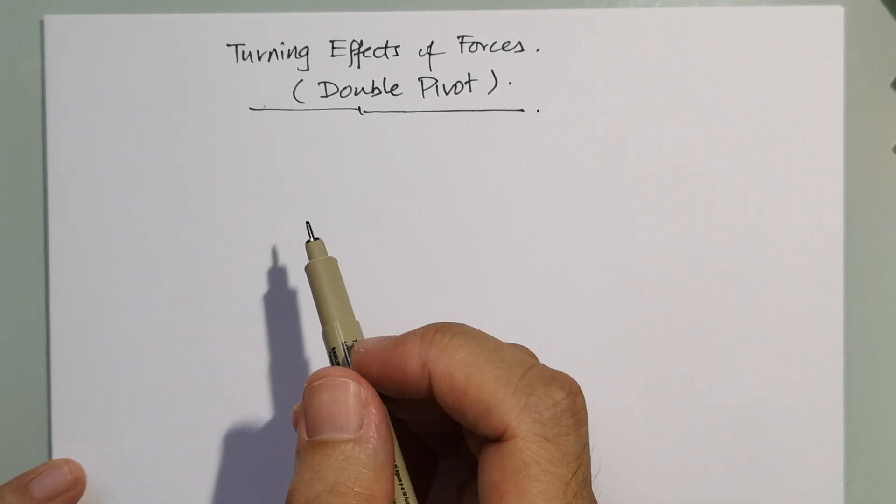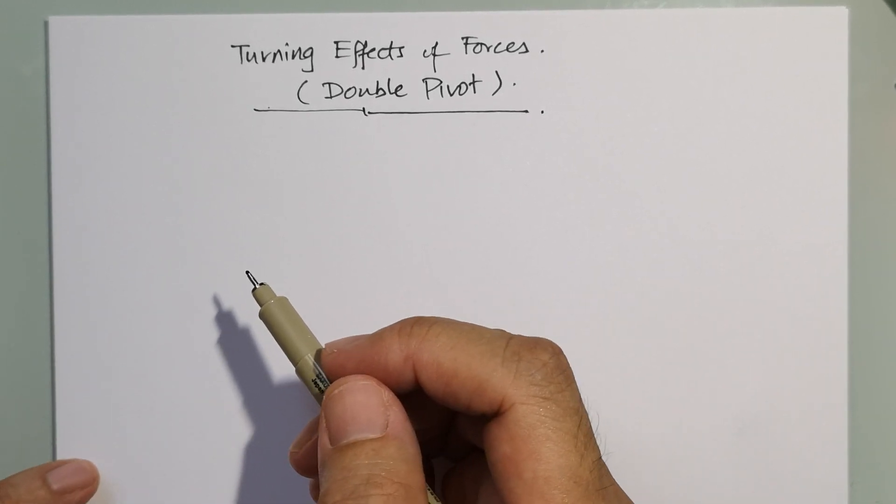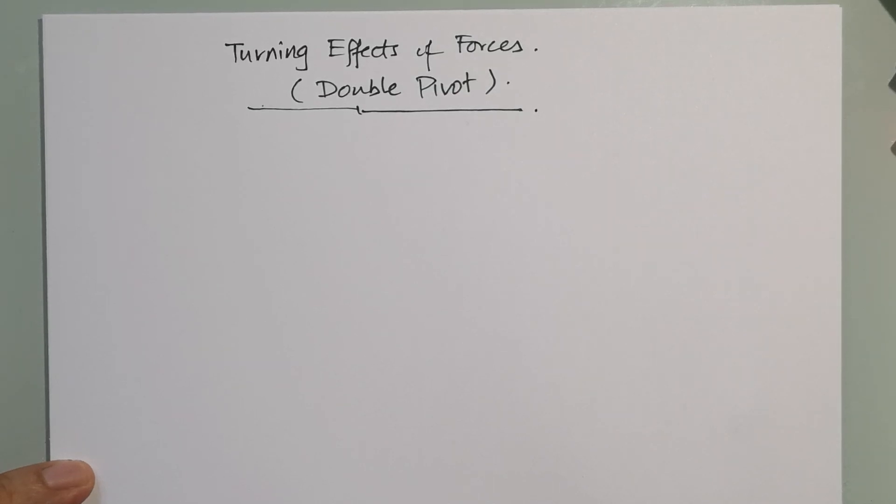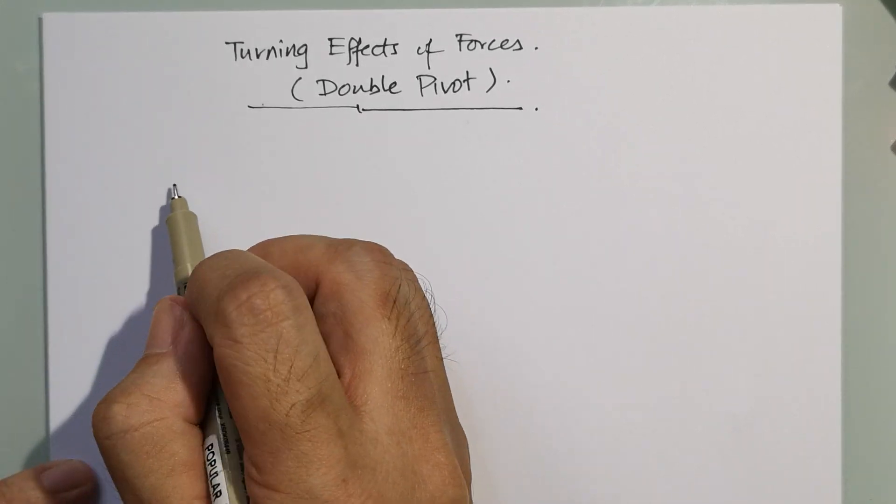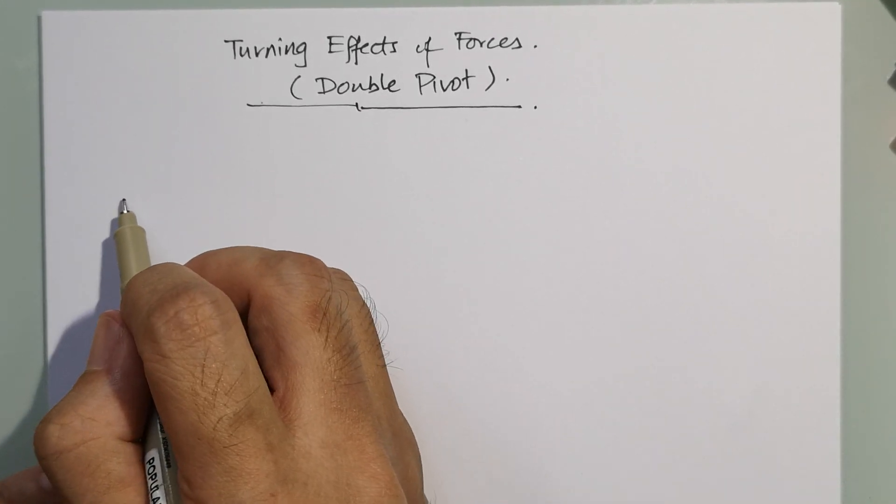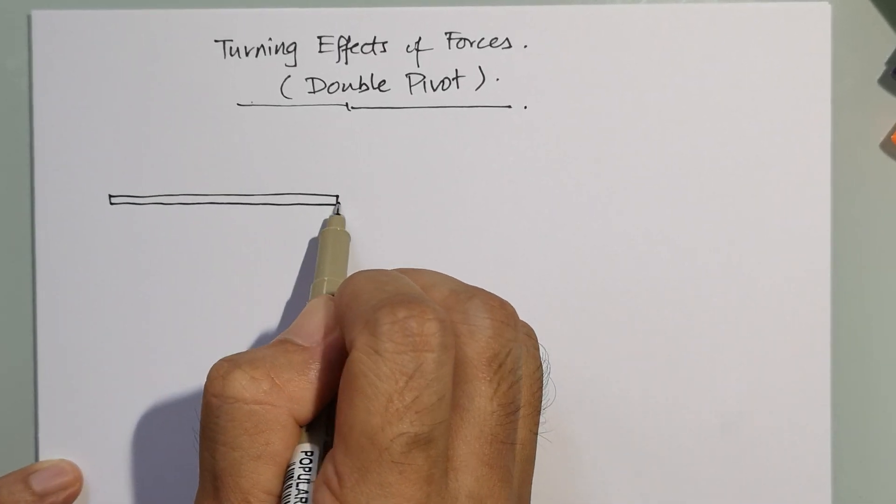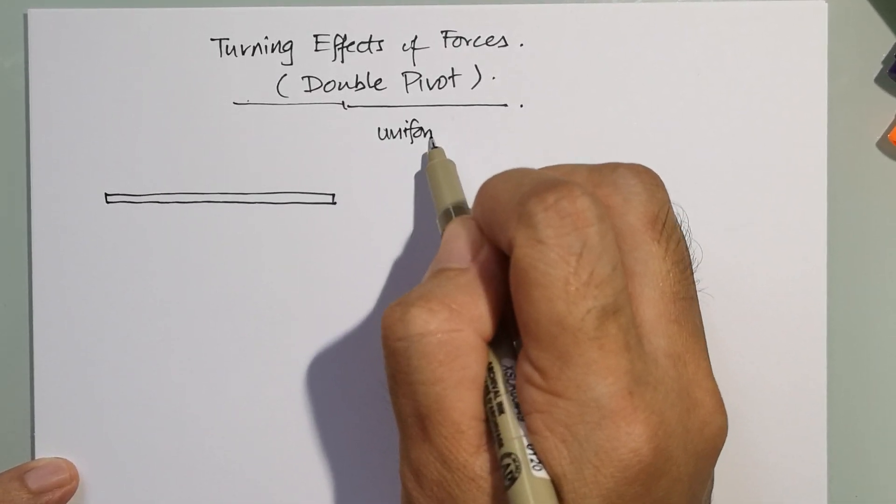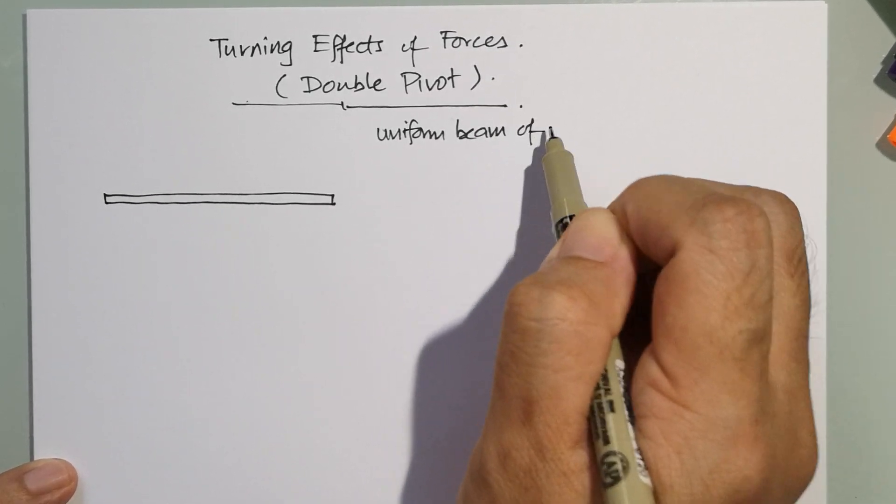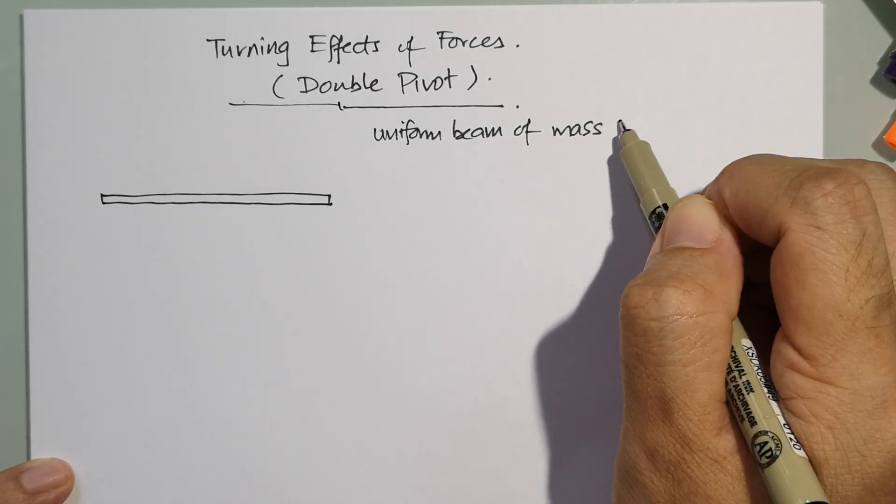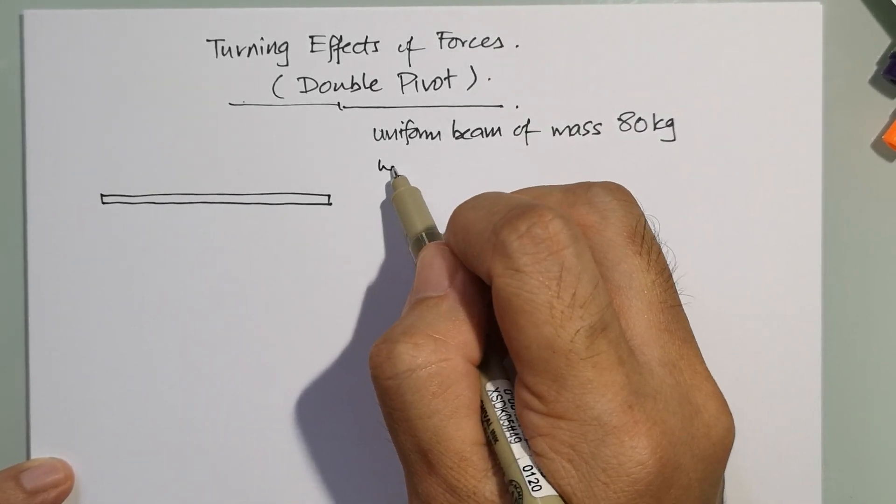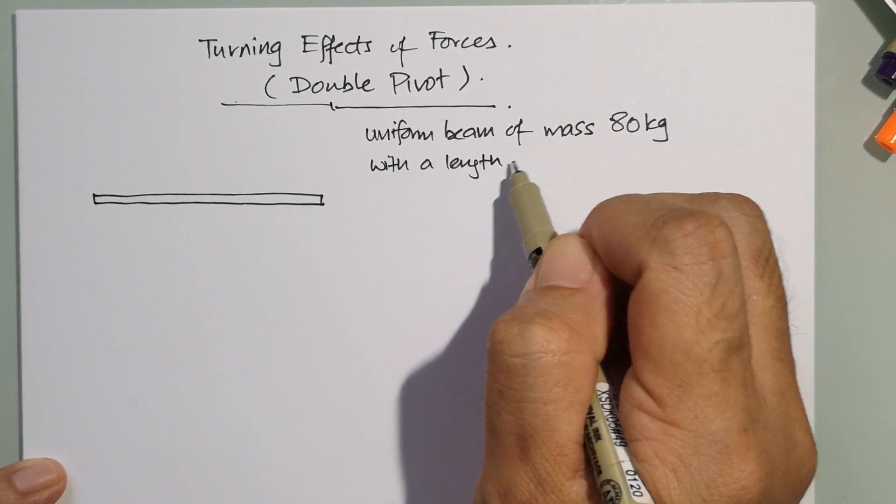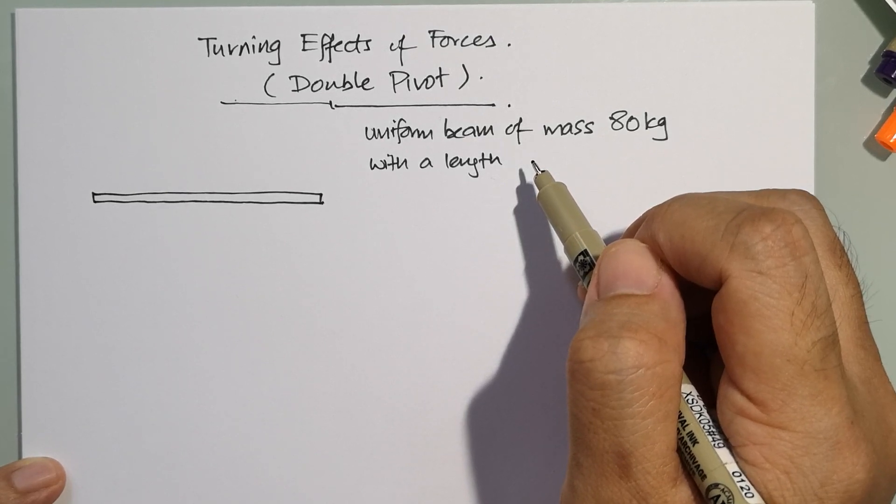Let's just consider our situation here. In all the very simple turning effects of forces questions we always deal with a single pivot, and then you balance off the anti-clockwise moments with the clockwise moments. But when you have a situation like this, let's consider this question. You have a beam, and the question would usually say that this is a uniform beam of mass 80 kg with a length, say, 8 meters.